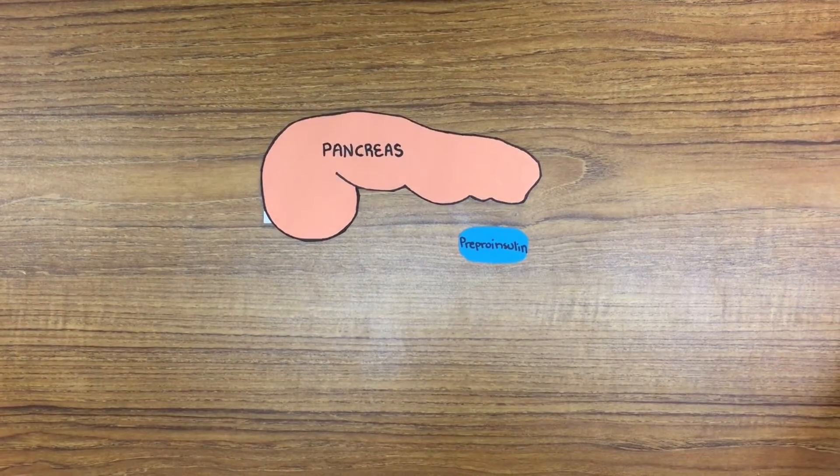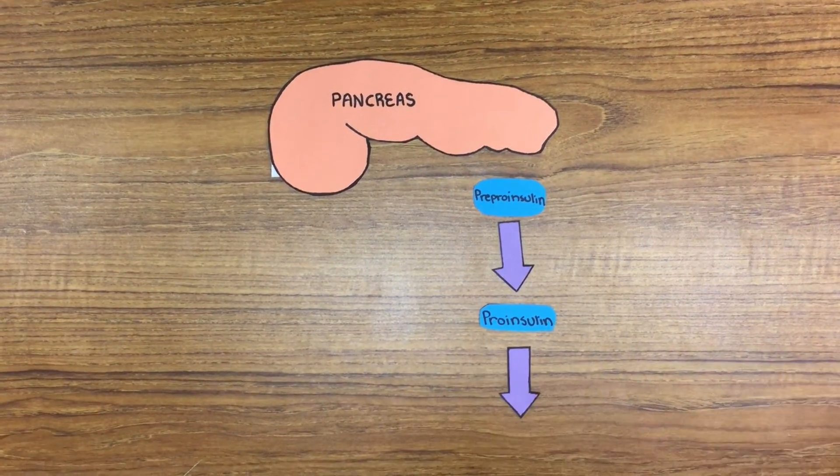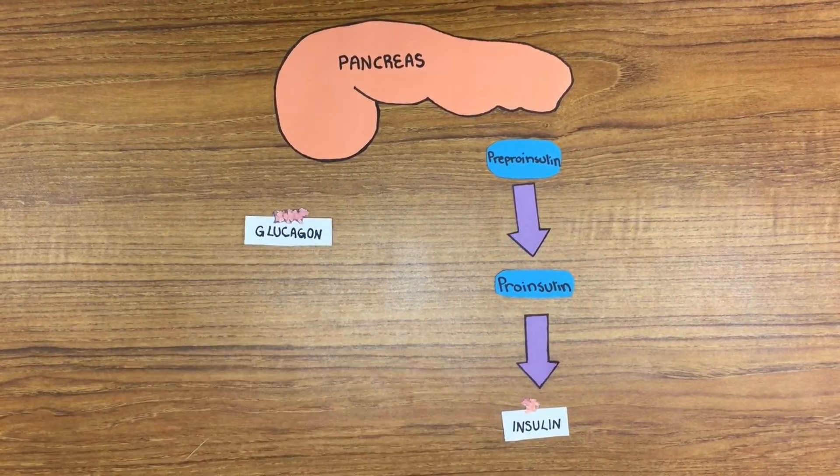Pre-proinsulin is produced in the beta cells of the pancreas. It is converted to proinsulin and then mature insulin. Glucagon is produced in the pancreatic alpha cells.